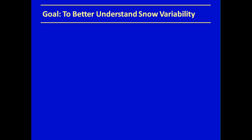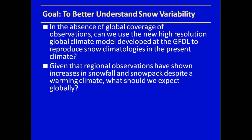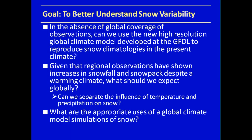Our goal is to better understand snow variability. In the absence of global coverage of observations, can we use this new high-resolution global climate model from GFDL to reproduce snow climatologies in the present climate? Given that regional observations have also shown an increase in snowfall despite a warming climate, what should we expect globally? Can we separate the influence of temperature and precipitation on snow, and what are the appropriate uses of these global climate model simulations?